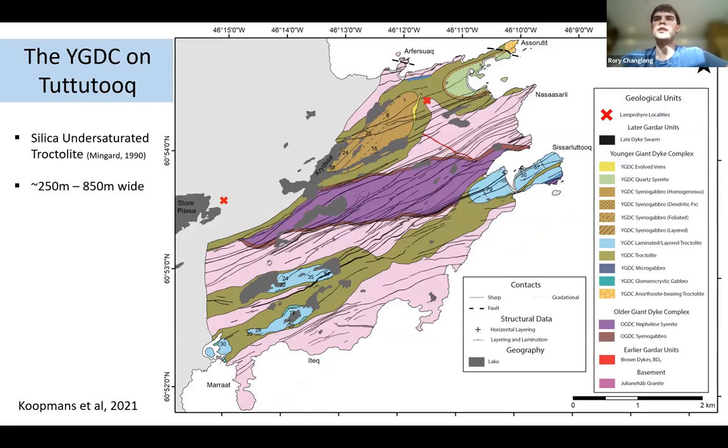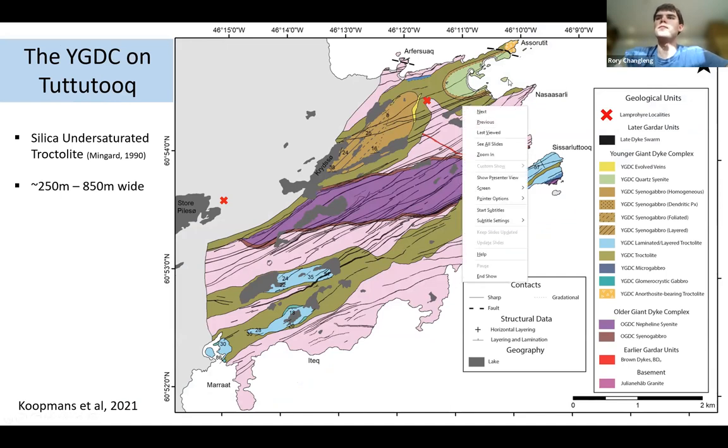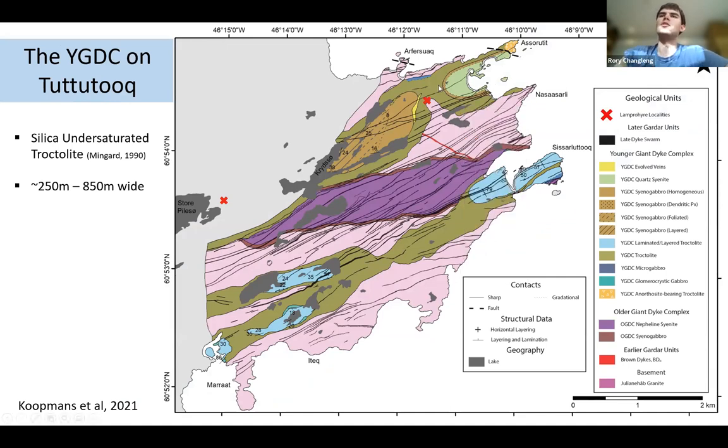This is a map which me and my colleagues made in 2019. And we see that in the north we have here the green troctolite, which is the silica undersaturated troctolite, which makes up the majority of the dike. And we see this in both north and in the south. The dike's variable in width from 250 meters to 850 meters.